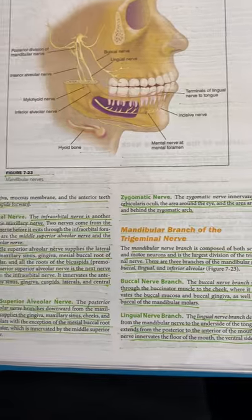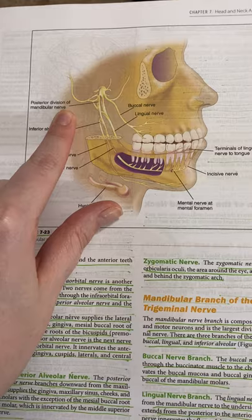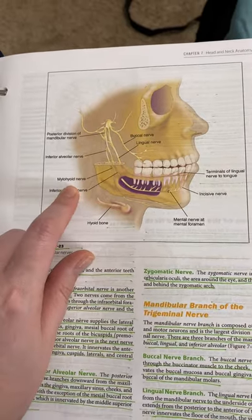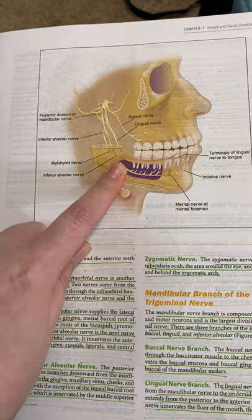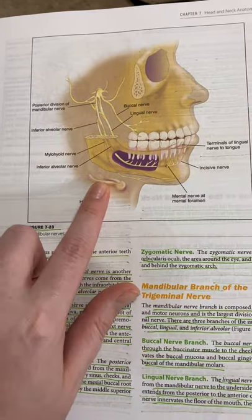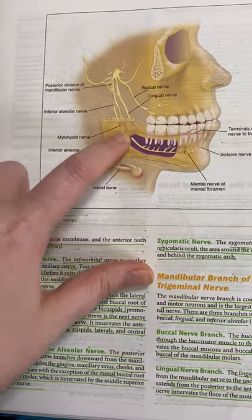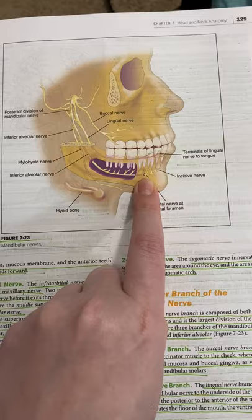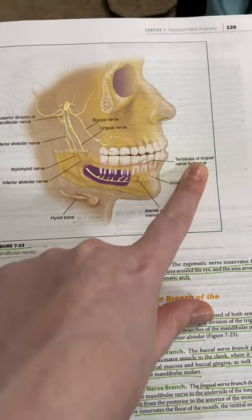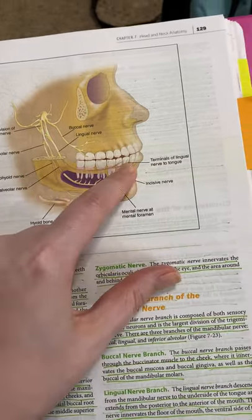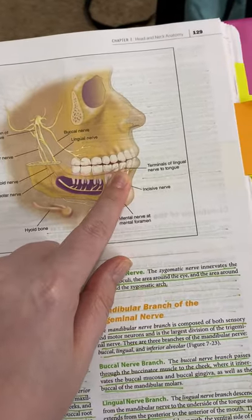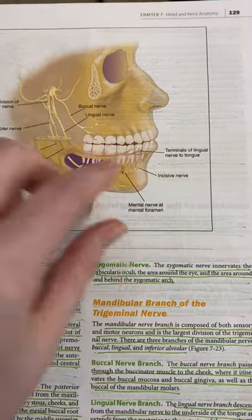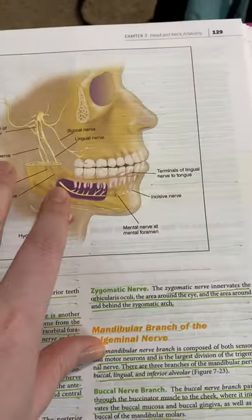The mandibular branch of the trigeminal nerve includes the posterior division of the mandibular nerve, the inferior alveolar nerve, the buccal nerve, and the lingual nerve. There's also the mylohyoid nerve and the inferior alveolar nerve again branching down along the hyoid bone, the mental nerve at the mental foramen, the incisive nerve going to the incisal teeth, and the terminal branches of the lingual nerve to the tongue — which allow you to taste, feel hot and cold, and send signals to the brain. These nerves deliver the one message a tooth can give: ouch.